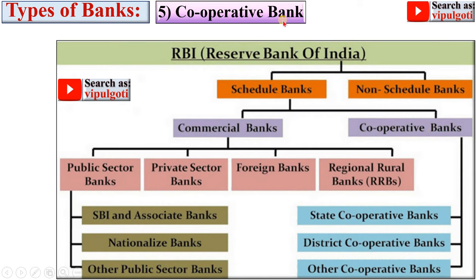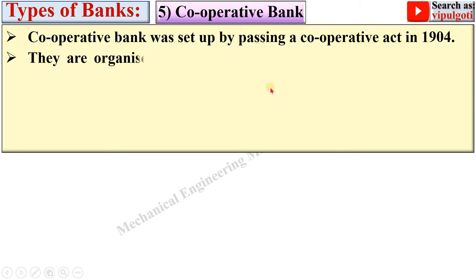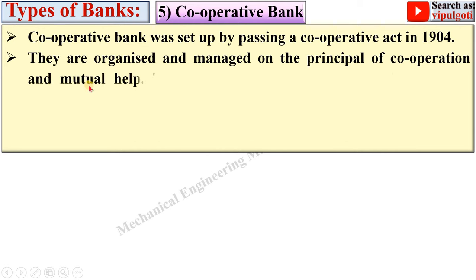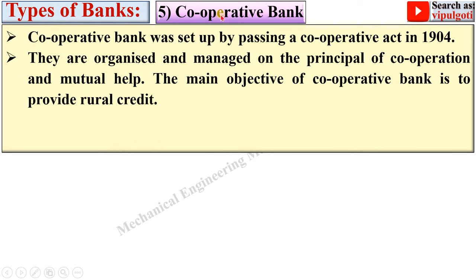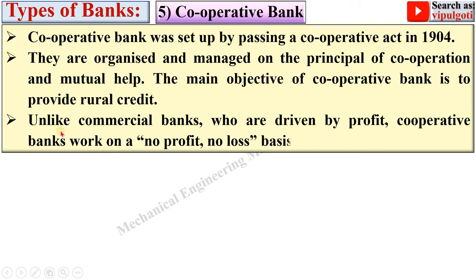Next, Cooperative Banks. Cooperative Banks were set up by passing a Cooperative Act in 1904. They are organized and managed on the principle of cooperation and mutual help, which is why they are called Cooperative Banks. The main objective is to provide rural credit. Unlike commercial banks driven by profit, Cooperative Banks work on a no profit, no loss basis. The main function of Cooperative Banks is to provide credit to rural areas.